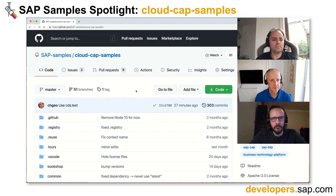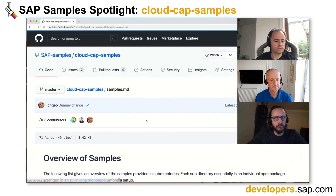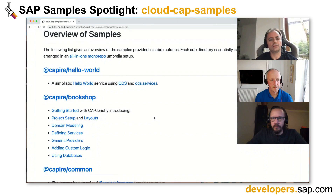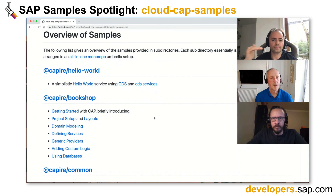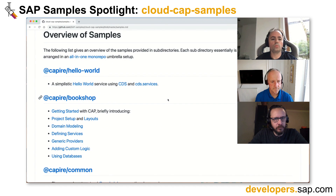One thing we could do is go to the samples.md file, which is a markdown file. That basically gives us a little outline of the different parts of the repository together with the features they are demonstrating. The bookshop is the canonical example, which shows a lot of the modeling capabilities and also the runtime capabilities of the programming model.